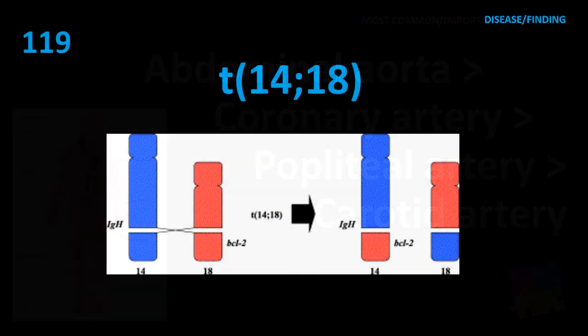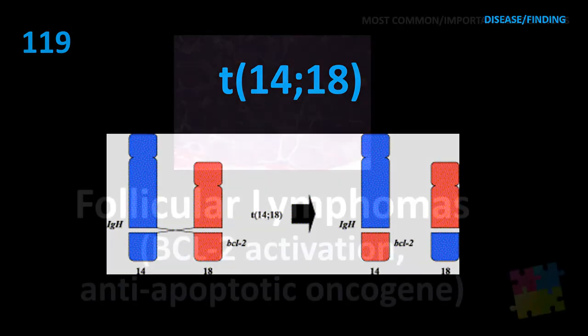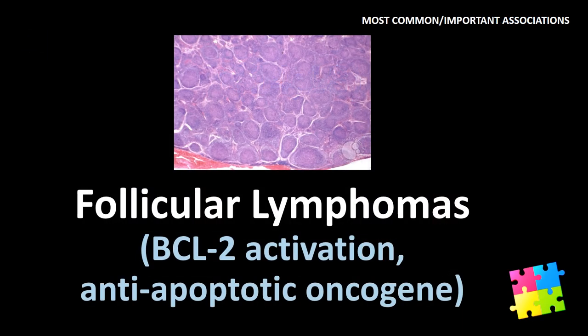Item 127: Translocation 14;18 — follicular lymphomas, BCL-2 activation, anti-apoptotic oncogenes.